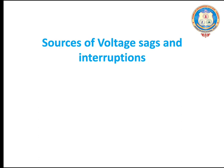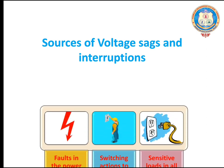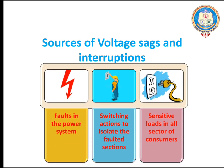What are the sources of voltage sags and interruptions? Fault in the power systems, the switching actions to isolate the faulted sections, and the sensitive loads in all sectors of the consumers.